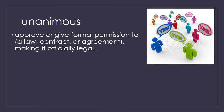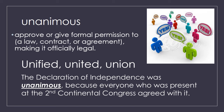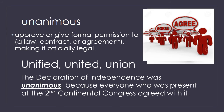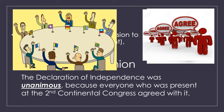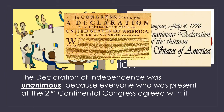Your next word is unanimous. Unanimous means in full agreement, in total full approval of something. We actually get unanimous from the words united, unified, and union. The Declaration of Independence was unanimous because everyone present at the Second Continental Congress agreed with it. A unanimous decision means there is not one person saying no. In Congress, on July 4th, 1776, it was the unanimous declaration of the 13 United States of America.